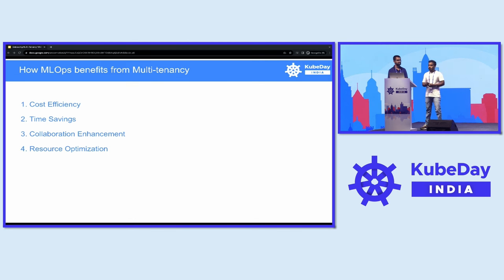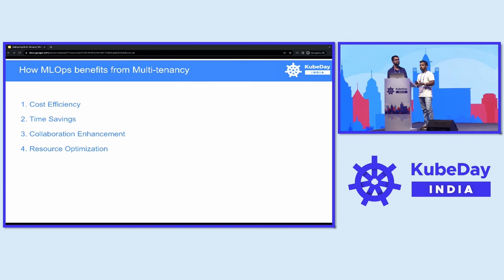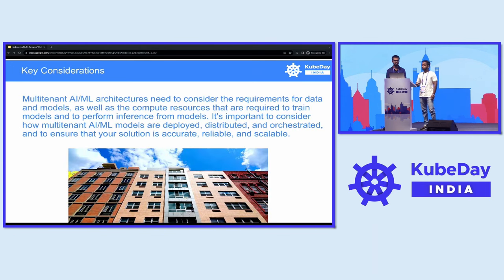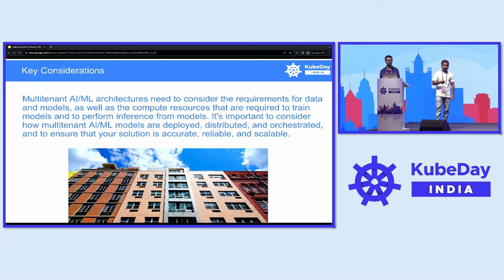Then there's resource optimization. With multi-tenancy, resources like compute power and storage are shared and optimized, ensuring available infrastructure is used efficiently and reducing waste.